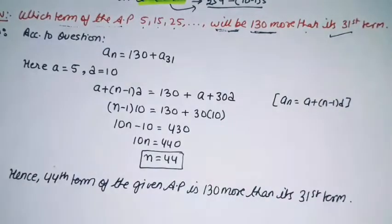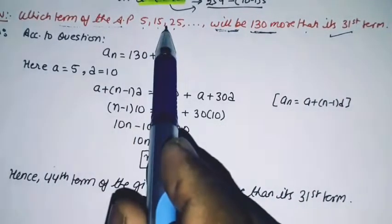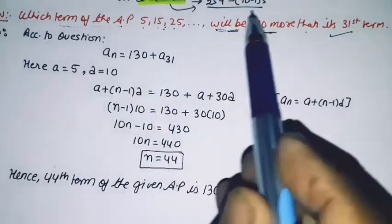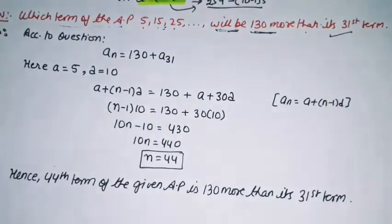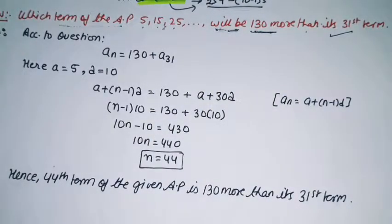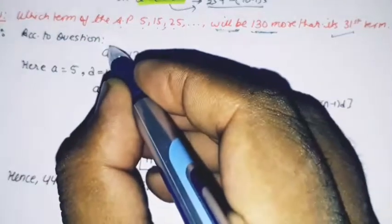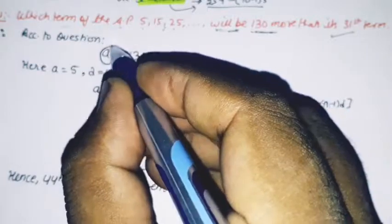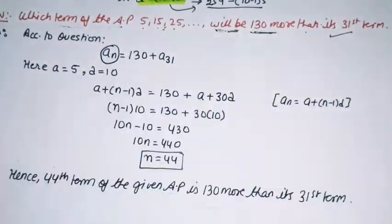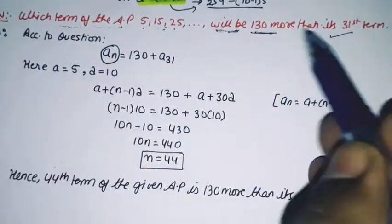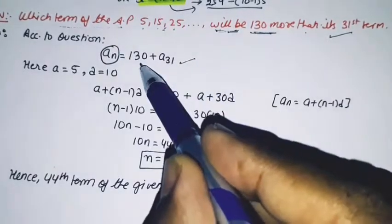We are assuming an is the required term - which term is 130 more than the 31st term?